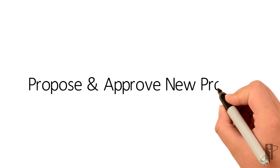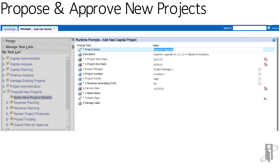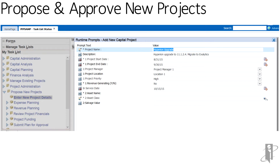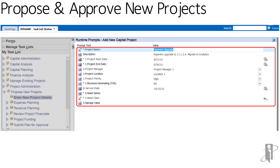Within PFP, end users have the ability to propose new projects and approve them. There are pre-built task lists within the PFP application and end users simply follow the task list to plan out their projects. They can go to propose new projects, right-click, enter the new project details, and that executes a business rule where they can enter all of the applicable information: the project name, description, start date, end date, project manager, location, and priority. For a project surrounding a capital asset, they can enter the end service date, and it ties in those capital asset pieces so that you can calculate your future depreciation expense.